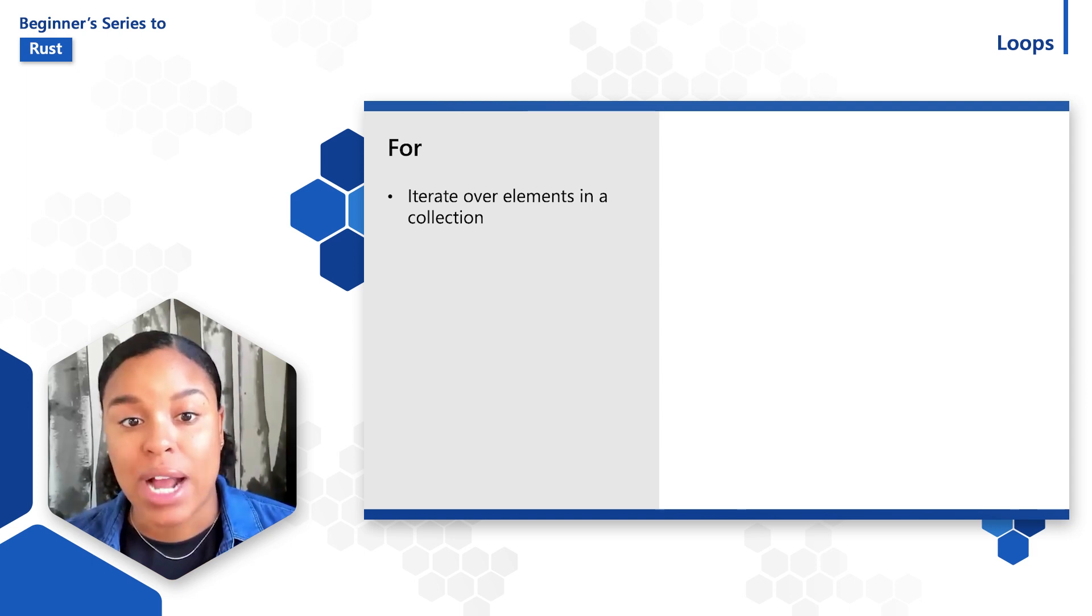For loops are best for iterating over elements in a collection like an array. With each pass of the for loop, values are extracted from an iterator.